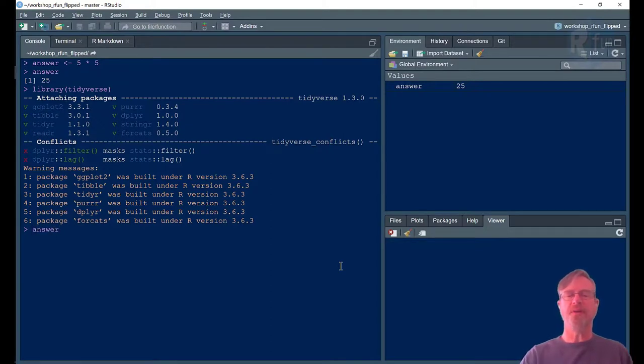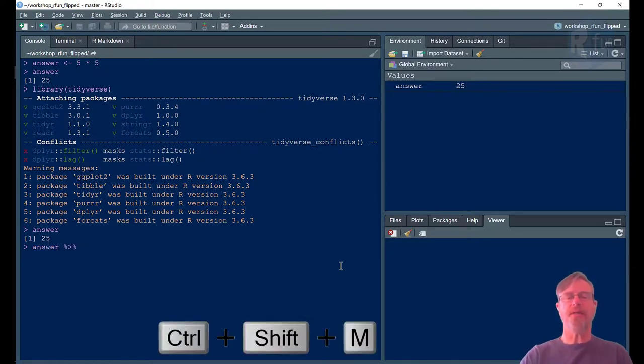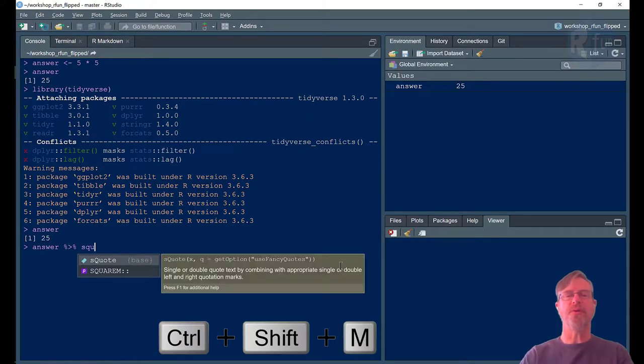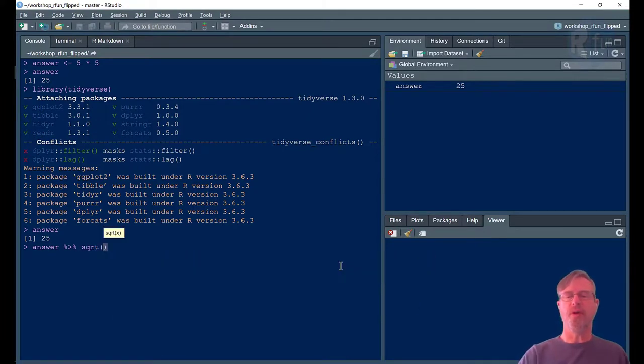So remember, I still have an object called answer. It has a value of 25. And if I type answer, and then take the square root of that, the answer is 5.